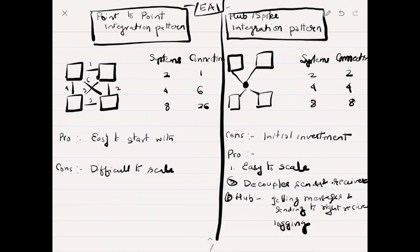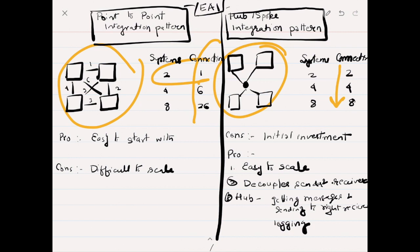To summarize, the difference between point-to-point integration pattern and hub-and-spoke integration pattern: point-to-point system has system A talk to B. Initially it's easy to set up, but as we scale, point-to-point system requires a lot more connections.